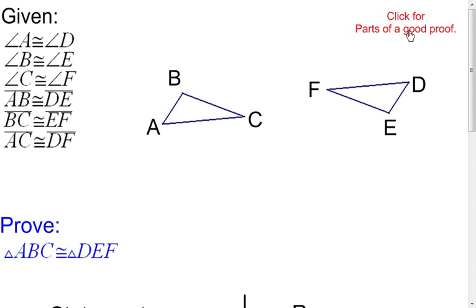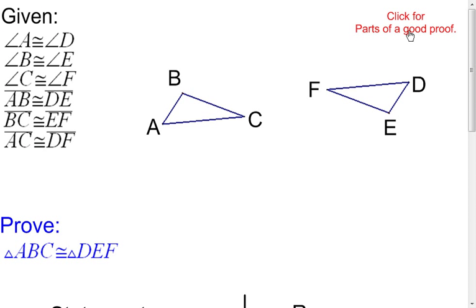Step one is to state the conjecture or theorem. In this problem, it doesn't give us one, so we can skip that. Part two is to list the given information — it's all right there. Step three is to draw a picture and mark it up. The picture's already here, so now let's go to our given information and mark up everything we know.